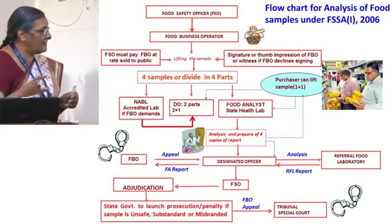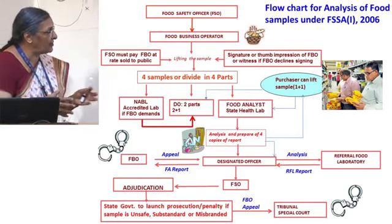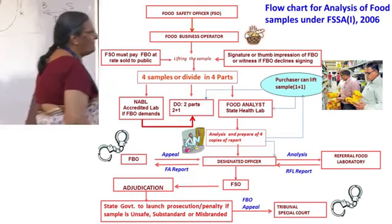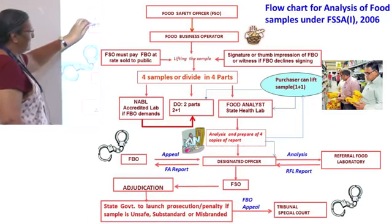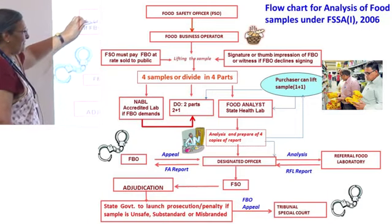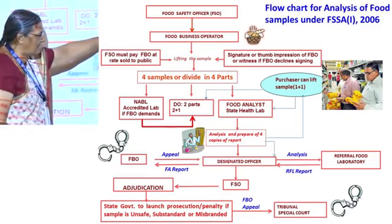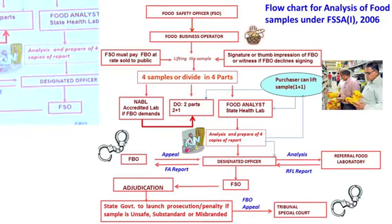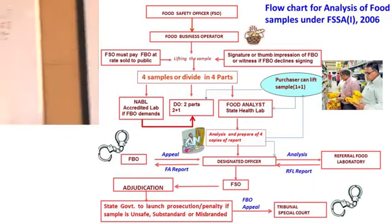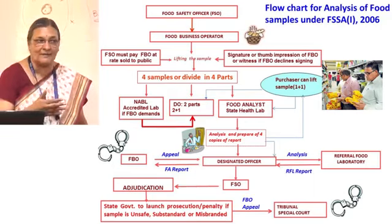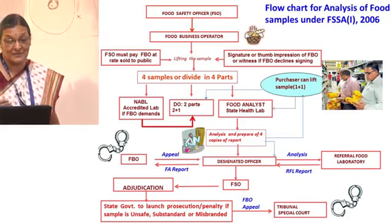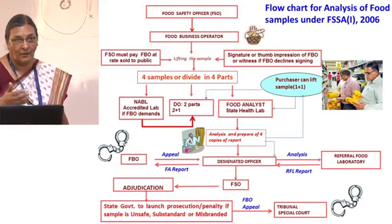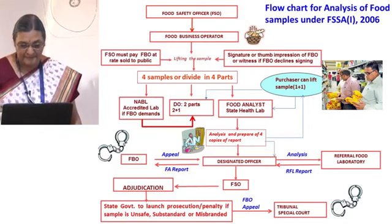The topic is handling of the analysis of FSSAI samples. This applies to all three: the NABL-accredited laboratory, the state public health laboratory, and the referral food laboratory — all referred to as regulatory laboratories, since the sample handling and analysis process is the same for all three.